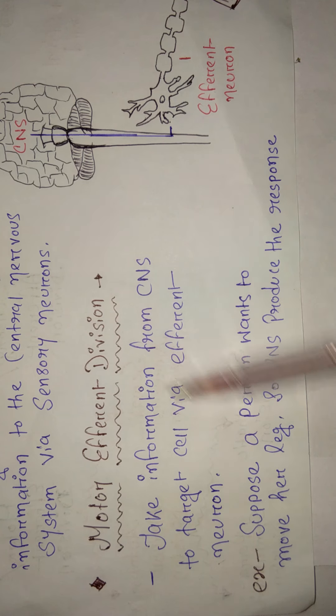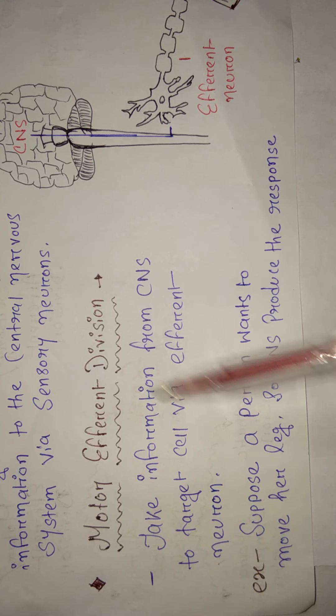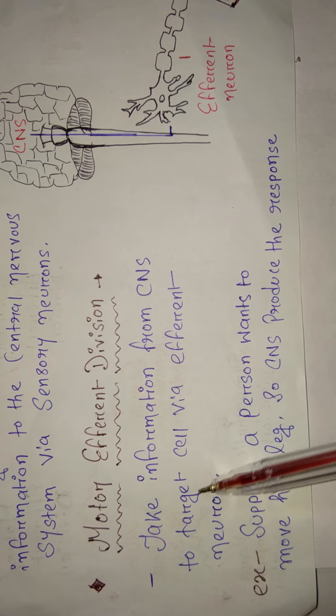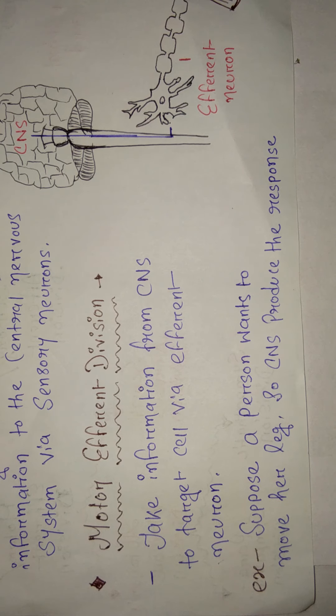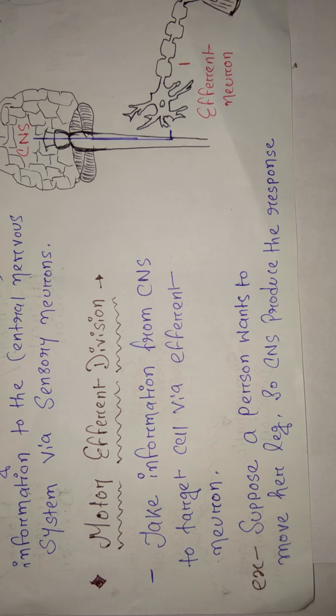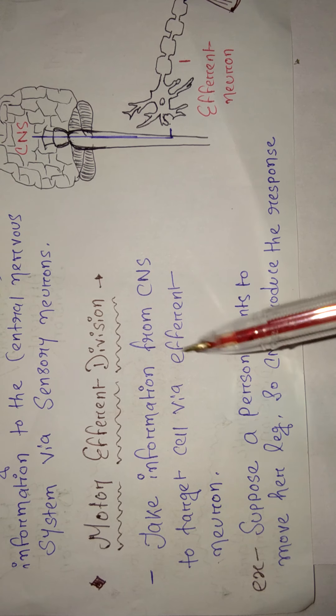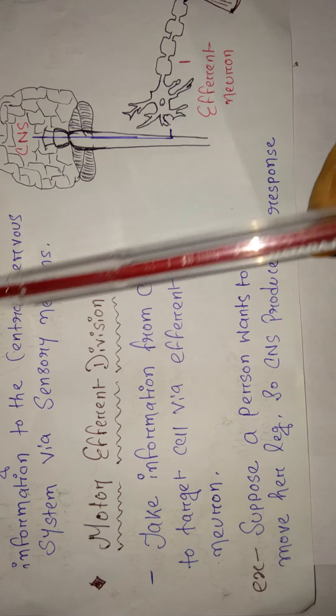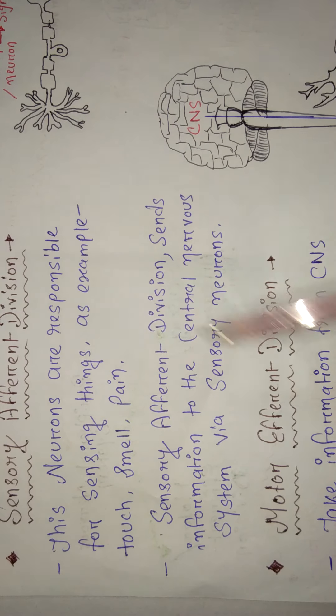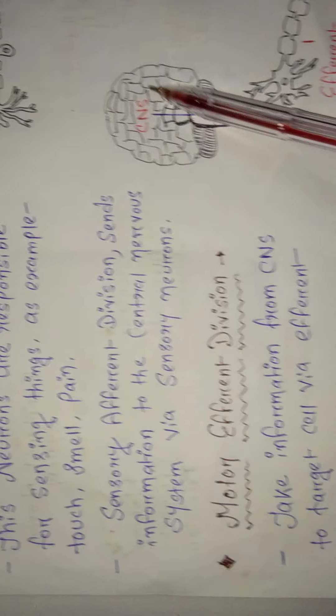Motor neurons take information from the central nervous system and carry it to the target cell. Let me give an example so you can understand what the sensory nervous system and motor division do.